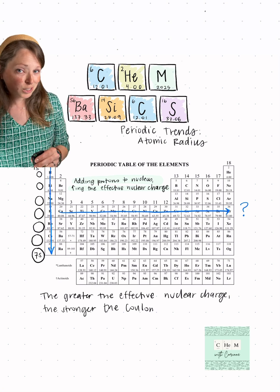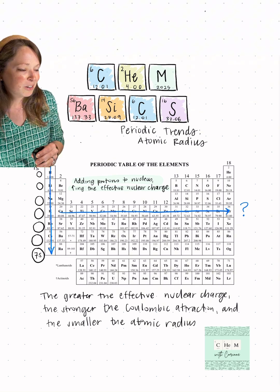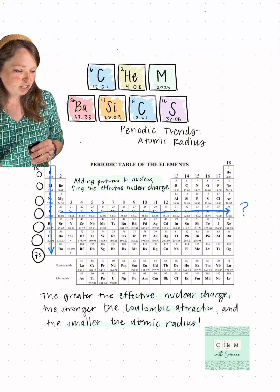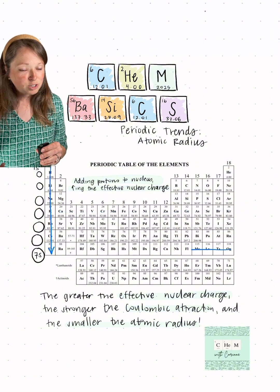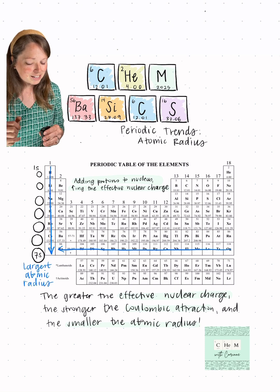What are the official terms you need to describe this change? You want to talk about as you're moving across a row or a period in the periodic table, you are increasing the effective nuclear charge. When you increase the effective nuclear charge, this is going to increase the Coulombic attraction, effectively shrinking the size of the atomic radius.